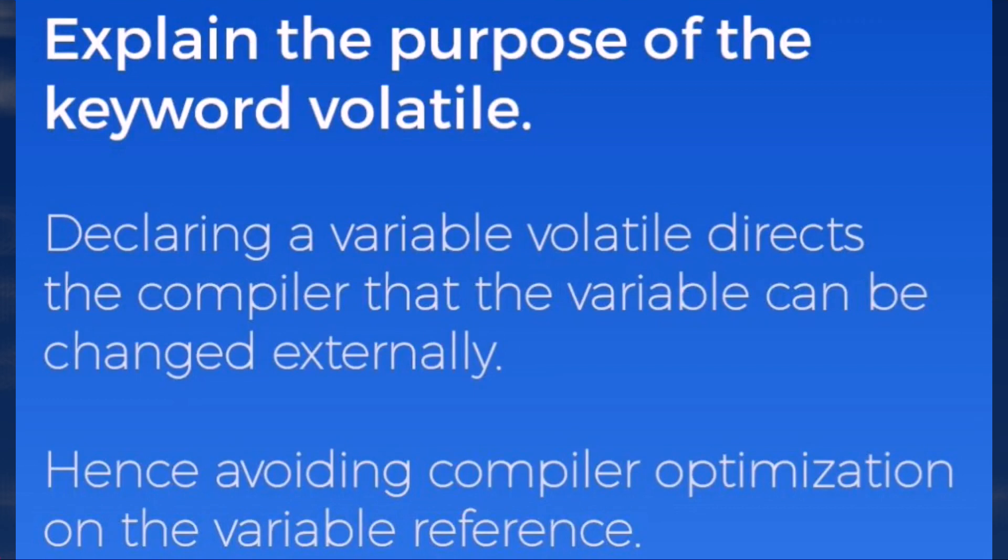Explain the purpose of the keyword volatile. Declaring a variable volatile directs the compiler that the variable can be changed externally, hence avoiding compiler optimization on the variable reference.